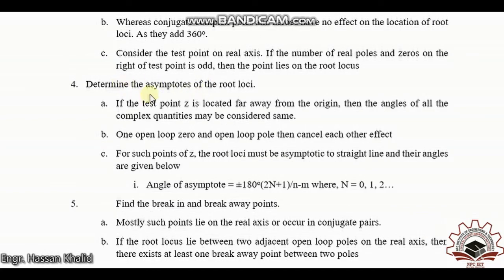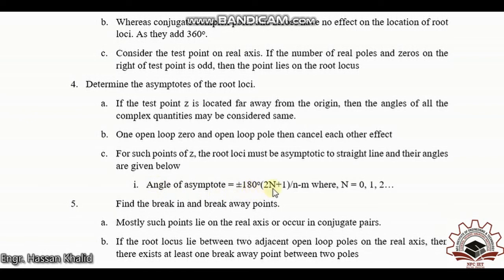In the fourth rule, determine the asymptotes of the root loci. If a test point z is located far away from the origin, the angles of all complex quantities may be considered the same, with one open loop zero and one open loop pole canceling each other. For such points, the root loci are asymptotic to straight lines whose angles are calculated as ±180°(2n+1) / (n−m), where n = 0, 1, 2, etc.